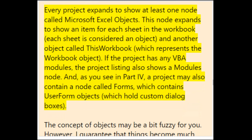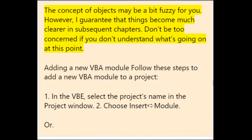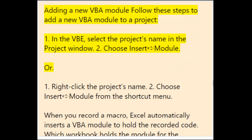Every project expands to show at least one node called Microsoft Excel Objects, which shows an item for each sheet (each sheet is considered an object) and another object called ThisWorkbook. If the project has VBA modules, the listing also shows a Modules node. A project may also contain a node called Forms, which contains UserForm objects holding custom dialog boxes.